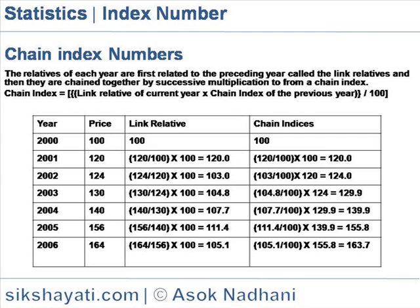The chain index is useful where data for the whole period are not available, or where the commodity basket or weights have to be changed. The link relatives of the current year and chain index from a given base will give a fixed base index with the given base year, as shown in the last column of the following table.